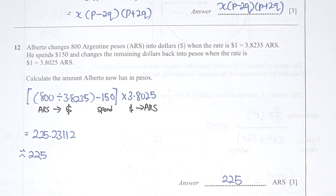Question 12: the final answer they want is how much he has left in pesos. First I took my amount in ARS, converted it into dollars, spent 150 of it — so minus 150 — then multiplied back into pesos. The final result is 225 after correcting to three significant figures.